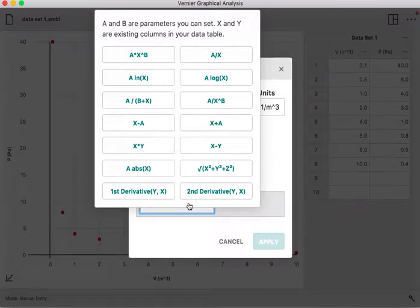In all of these examples, A and B are parameters that you set, and the X's and Y's are columns that already exist in your data table.